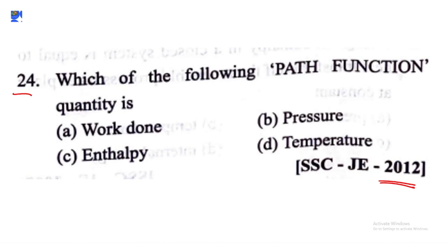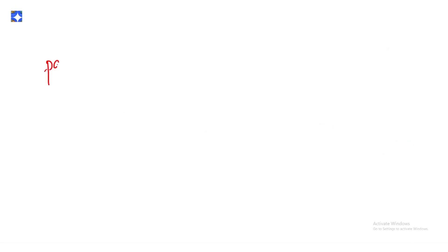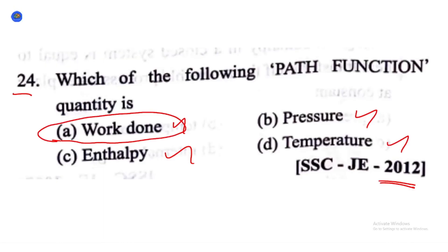Which of the following is a path function quantity? We have seen several such questions in past papers. The options are: option A work done, option B pressure, option C enthalpy, and option D temperature. As per thermodynamics, path functions depend upon the path taken between the end states. Those quantities are heat and work. So option A, work done, is the correct answer.